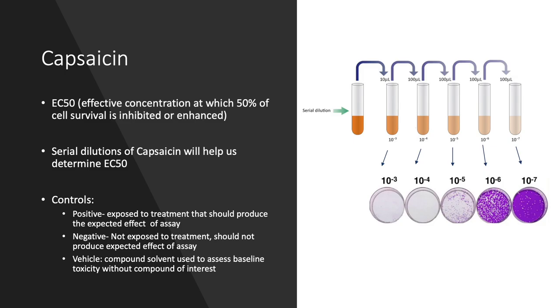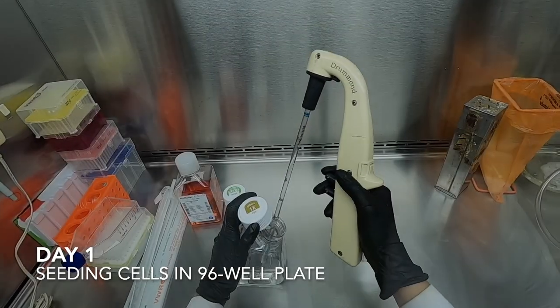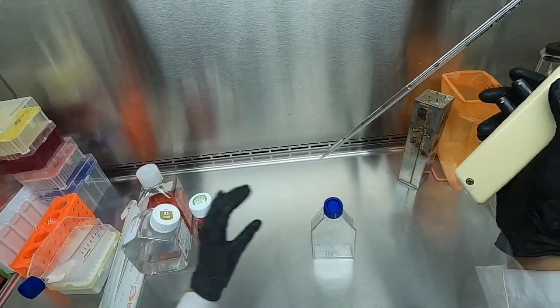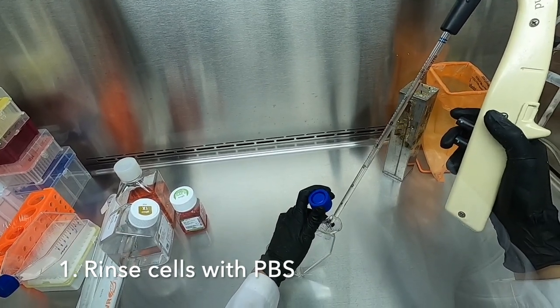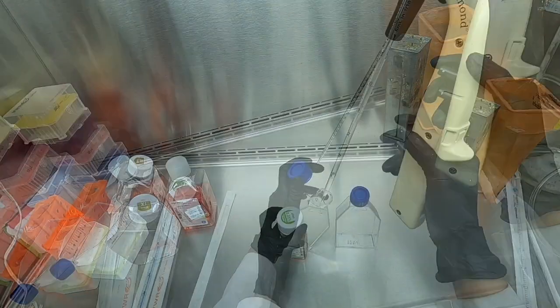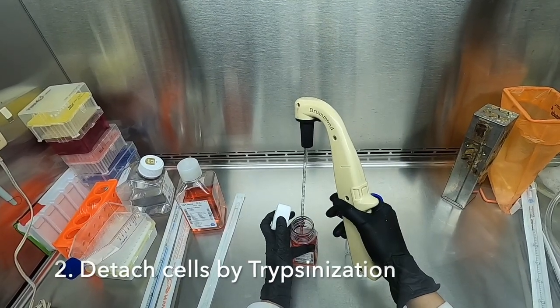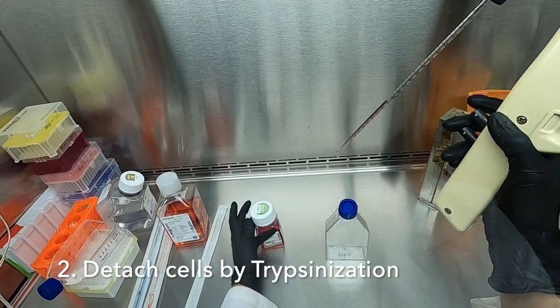So let's begin our experiment. We begin on day one by seeding cells in a 96-well plate. This is done by following the same steps that we used in our previous video for cell passaging. Briefly, we first rinse the excess FBS and media from our flasks. We then proceed to trypsinize our cells in order to detach from our flask.